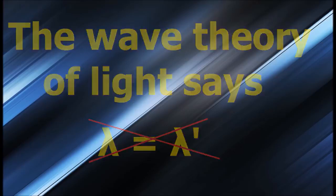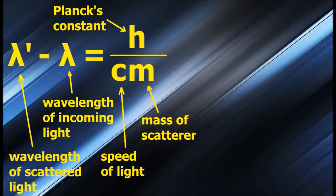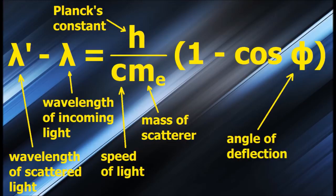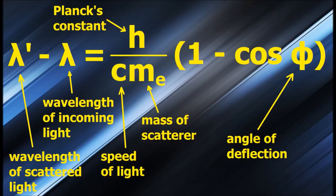After the experiment was performed, Compton found that this relationship held instead. The wavelength of scattered light minus the initial wavelength of the light equals Planck's constant, divided by the product of the speed of light and the mass of whatever the light was striking, which in this case was an electron, times one minus cosine of phi, where phi is the angle at which the light was deflected. Obviously, the incoming and outgoing wavelengths are not equal. If they were, their difference would be zero. Instead, this equation implies that the wavelengths of scattered light are larger than the wavelengths of the incoming light, and once again, we have this mysterious factor of H in the equation. So what's going on here?